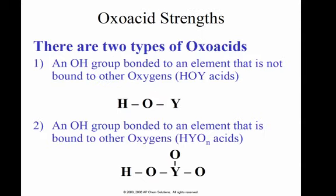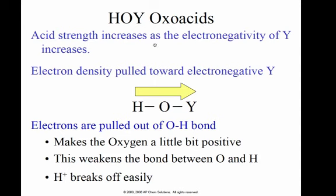There are two types of oxoacids. Oxoacids are acids that have H and O: a hydroxide group bonded to an element that we will call Y, which that element is not bonded to any other oxygens, and then we have a hydroxide group bonded to an element Y that is bonded to extra oxygens. Acid strength increases as the electronegativity of Y increases. If you'll remember, electronegativity increases going this way and up on the periodic table. And why is this? That's because the electron density over here pulls more electrons in this area over here, which is leaving that hydrogen over there easier to be released.